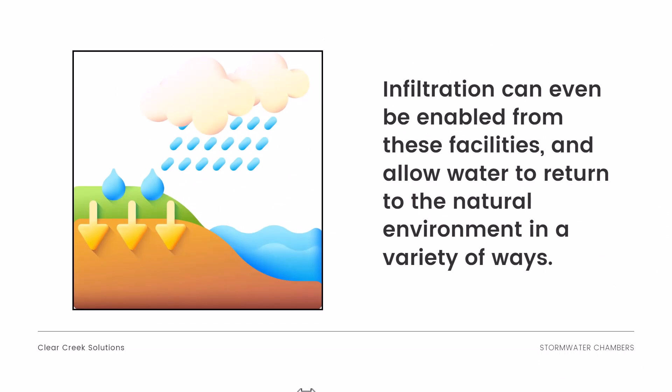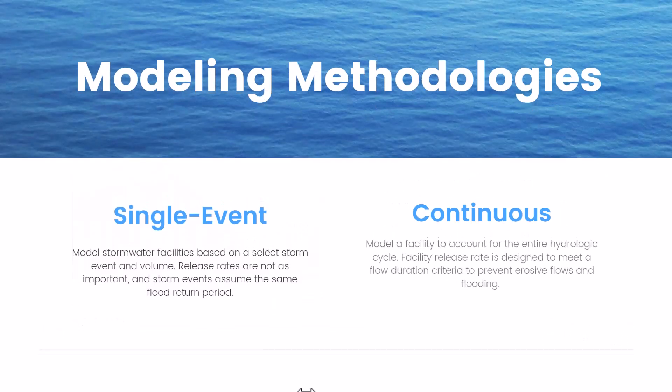Infiltration can also be enabled from these facilities, allowing water to return to the natural environment. It's not just detention ponds or bioretention trenches that can infiltrate water — many underground chamber and vault facilities also allow for infiltration.